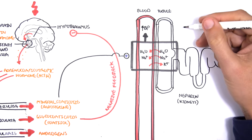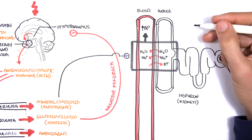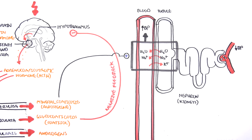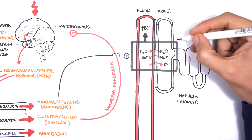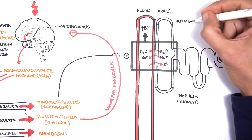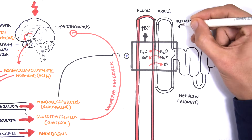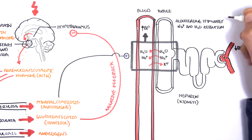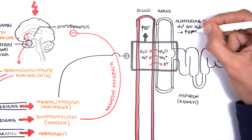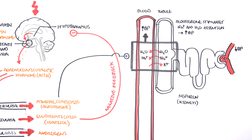Aldosterone primarily works at the distal part of the nephron — known as the distal convoluted tubule and the collecting duct. It stimulates water and sodium retention, thereby increasing blood pressure. It also tells potassium to be secreted out, which can lead to hypokalemia.